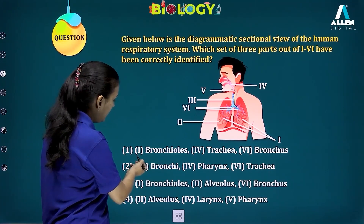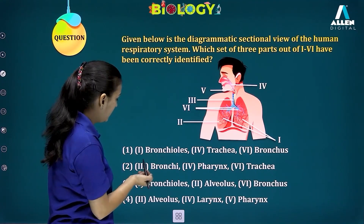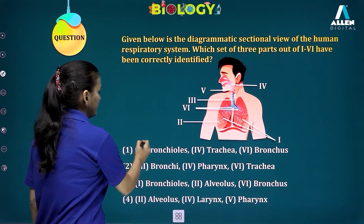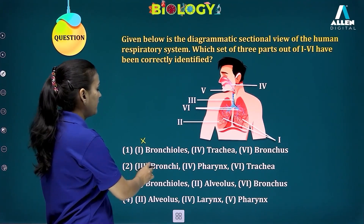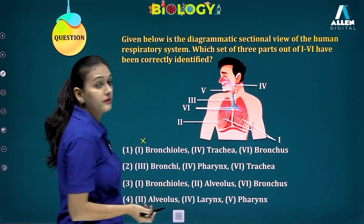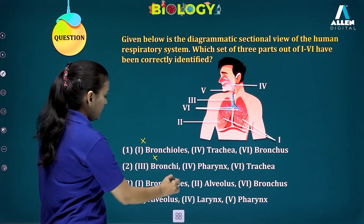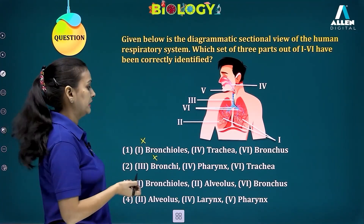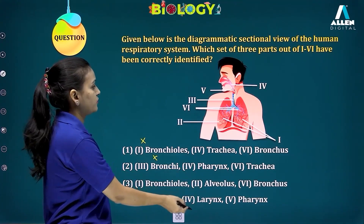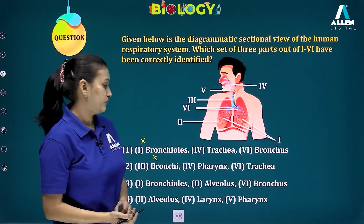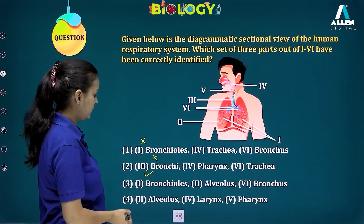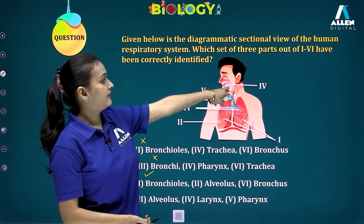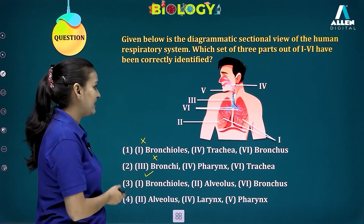Checking the options: Option one says label one is bronchioles — correct — but label four is trachea, which is wrong, so option one is incorrect. Option two says label three is bronchi — wrong, it's trachea — so incorrect. Option three says label one is bronchioles — yes; label two is alveolus — yes; label six is bronchus — yes. That's correct. Option four says label four is larynx, but it's pharynx — incorrect. So option three is the correct answer.